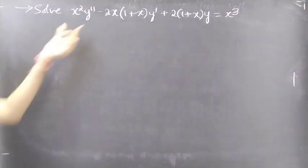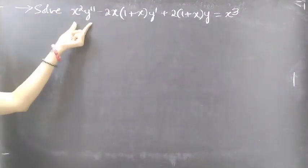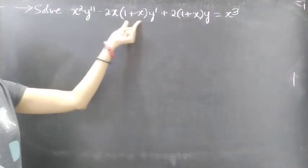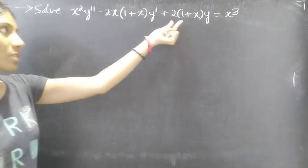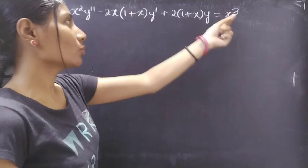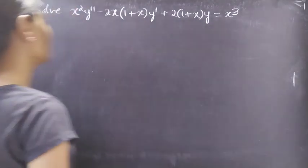Problem: Solve x squared y double dash minus 2x times (1 plus x) times y dash plus 2 times (1 plus x) times y equal to x cubed.